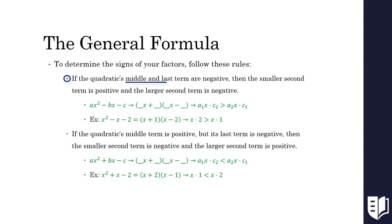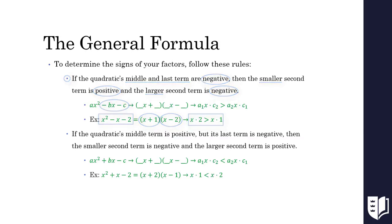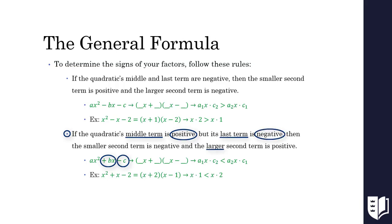If our quadratic's middle and last terms are both negative, then the larger factors that make up the middle term are negative and the smaller factors are positive. In the example x squared minus x minus 2, our outside factors of x times 2 are bigger than our inside factors of x times 1, so the negative goes in front of the 2. If our quadratic's middle term is positive, then the larger factors that make up the middle term are positive and the smaller factors are negative. In the example x squared plus x minus 2, our negative sign needs to go with our smaller factor of x times 1, so it goes in front of the 1 in parentheses.